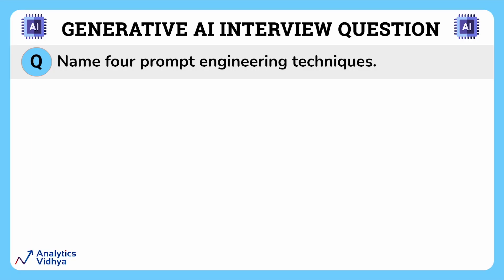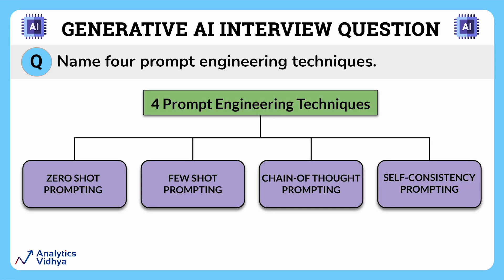In this question, we'll look at four different types of prompt engineering, which are zero-shot prompting, few-shot prompting, chain of thought prompting, and finally, self-consistency prompting. Let's discuss them one by one.